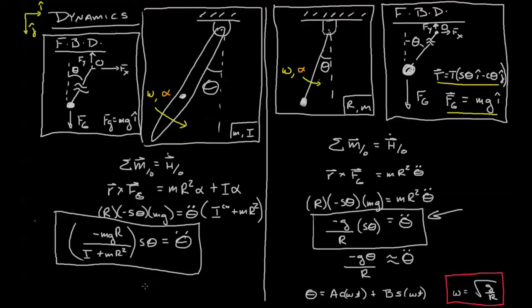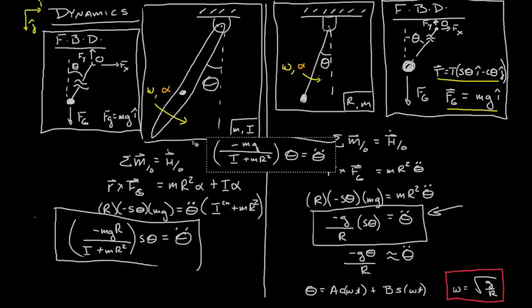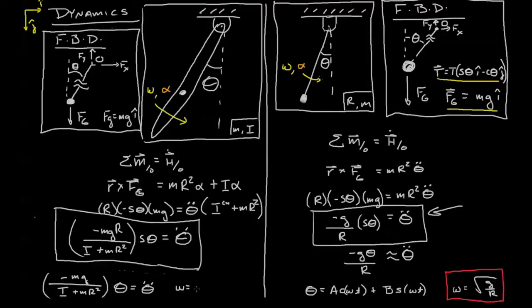Now we have our differential equation reduced to quadrature. If we make the small angle approximation, which we still can do, we end up with minus m g r over I plus m r squared theta equals theta double dot. Our omega is going to be the square root of m g r over I plus m r squared.